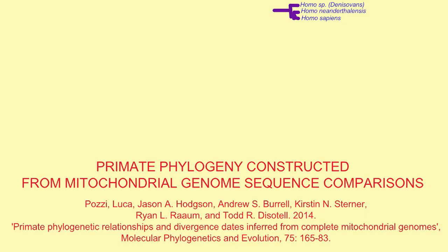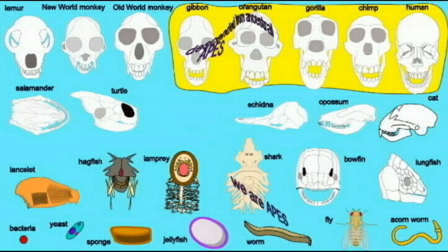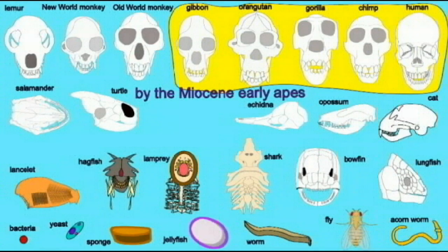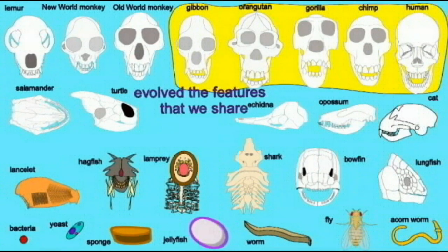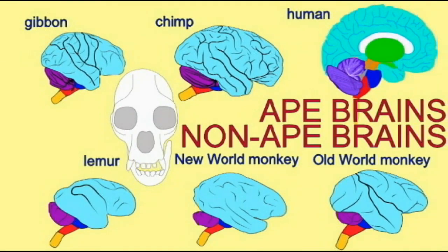Note that the gibbons — the numerous species of gibbons — are more closely related to each other than they are to any other apes, but they are classified as apes. The family Hominidae and the gibbons are then classified together as the biological group apes, and the sequence comparisons of mitochondrial DNA support this grouping.